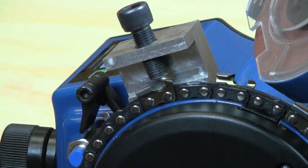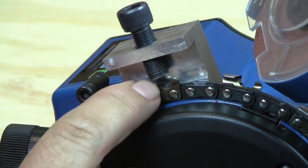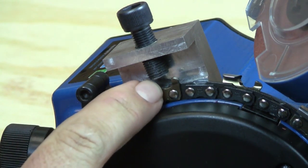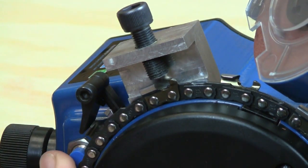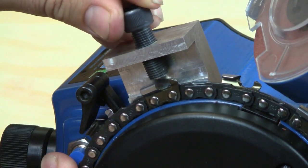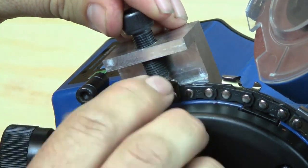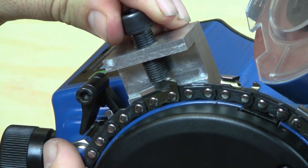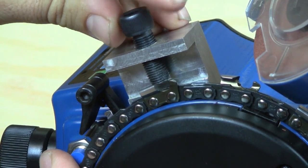Then what you want to do is manually move the chain around so that the very edge of the cutter that you've sharpened is right under the edge of this screw. Then tighten this down until it just touches the very tip of the cutter, like so.